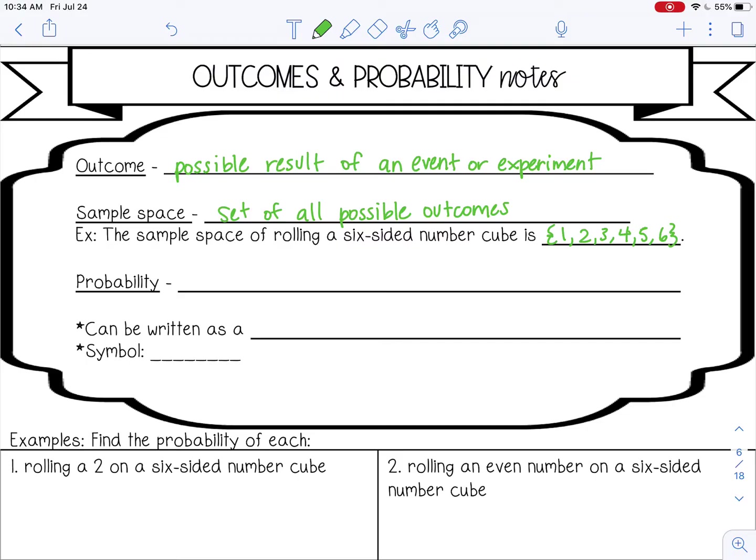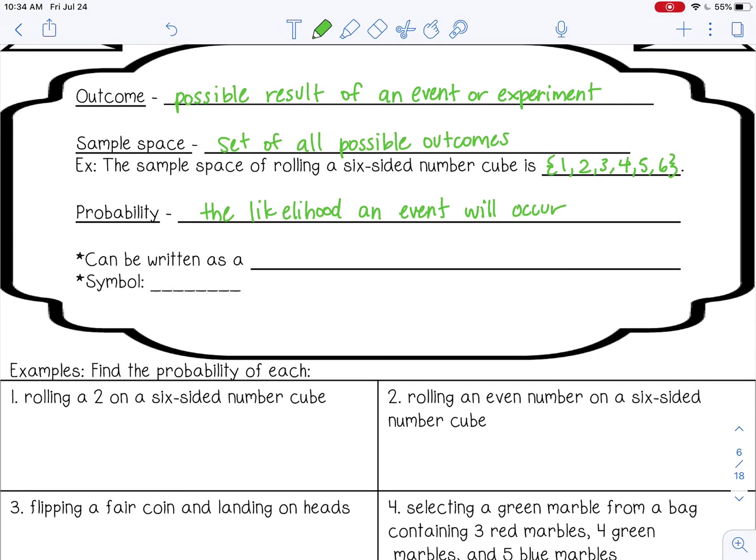Probability is the likelihood an event will occur. Probability can be written as a fraction, a decimal, or a percent. The symbol for probability is a P, and then in parentheses you put whatever event you're talking about, so the probability of A.